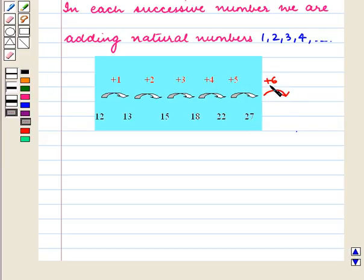So now, we will add 6 to 27 and we get 33. So our next term is 33.